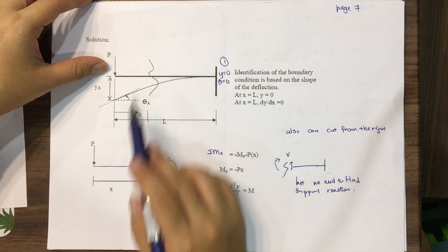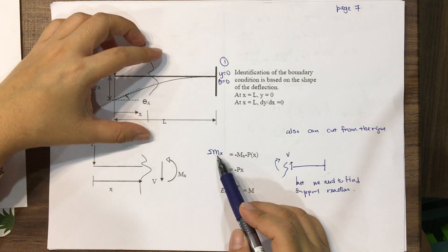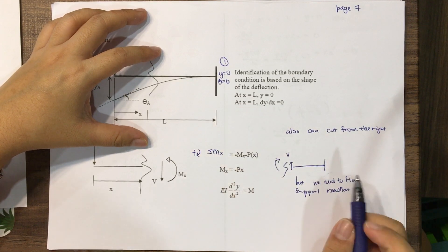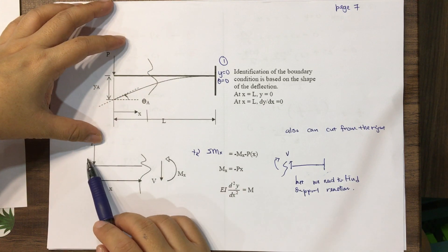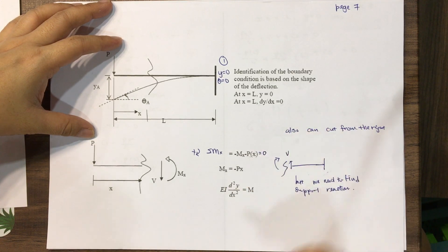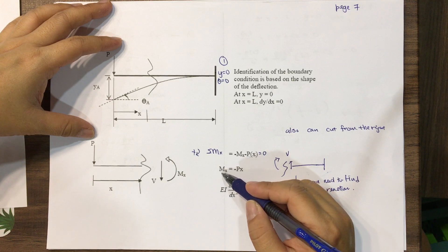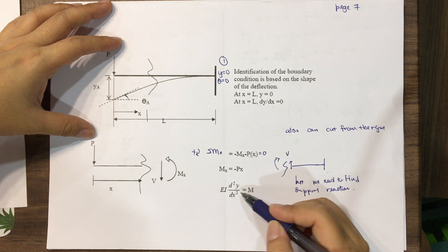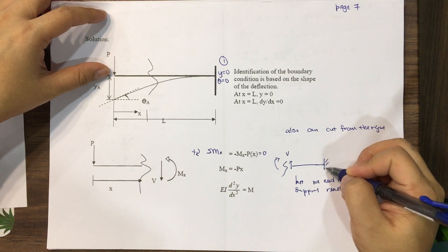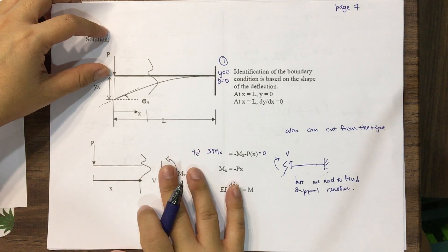We draw the free body diagram and cut section. When you cut at a location x from the free end, P is applied at the free end, V acts downward, and M(x) acts counterclockwise. Taking moments at the cut section: the sum of moments equals negative M(x) minus P times x equals zero, giving M(x) equal to negative Px. It is better to cut from the left (free end) side so you do not need to calculate support reactions.